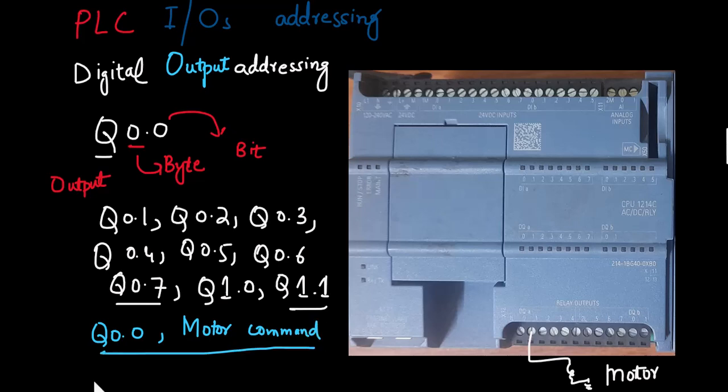So this is how we address various digital input and output channels. After addressing them we can use them in our PLC program. In the next video we will be talking about how to address memory bits and various analog input and output channels. Thank you for watching the video, see you next time.